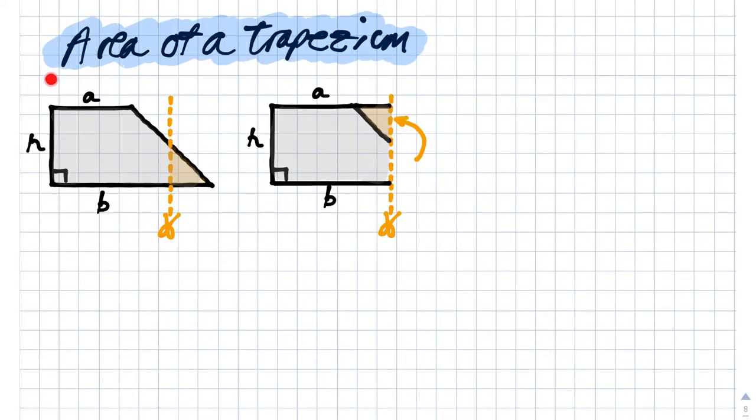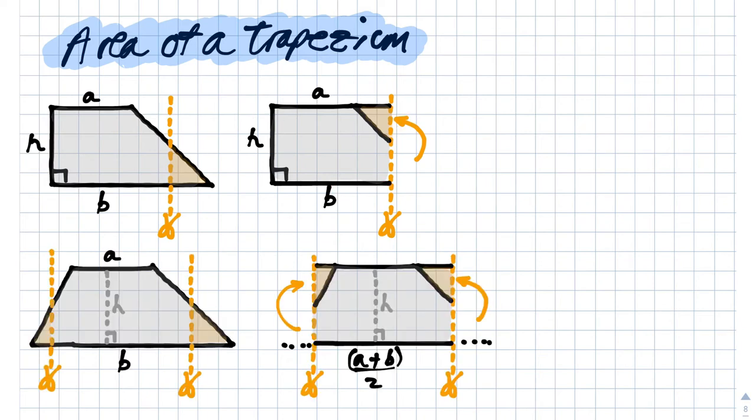For area of a trapezium, we can cut off that little bit and slide it in here. This is a simple trapezium—you can see we end up with a rectangle. Or for a more complicated one, we cut that triangle off each end. When we rearrange it we end up with a new rectangle, the same height as the original trapezium, but the width of the rectangle is halfway between a and b.